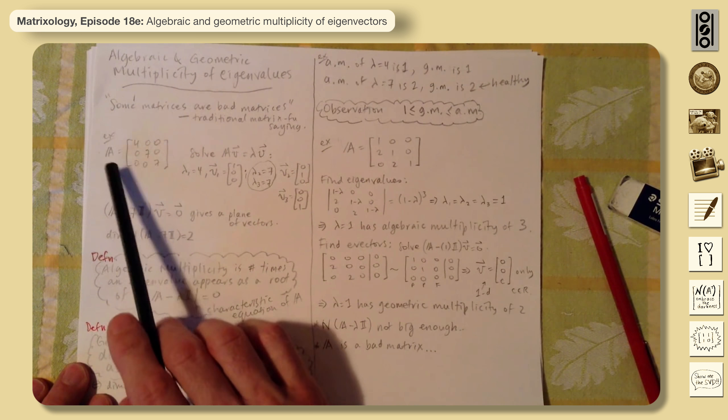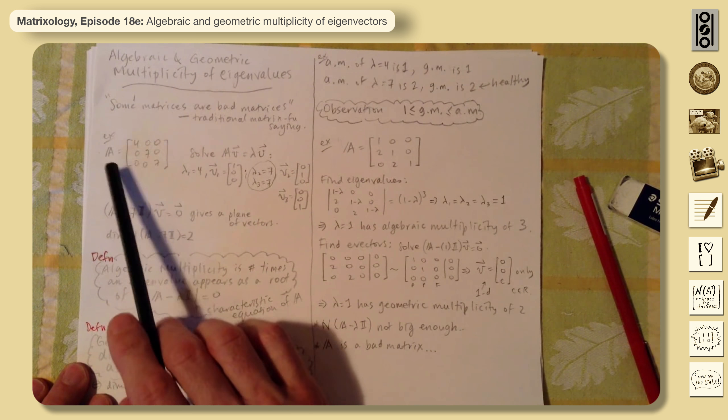And so, if you then go on and try to solve and find the associated eigenvectors, again because this diagonal business is very simple, lambda 1 equals 4, you'd end up with 1, 0, 0. So the x direction, if you like, in x, y, z.